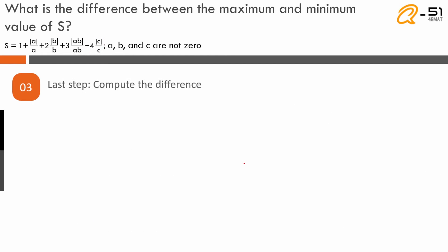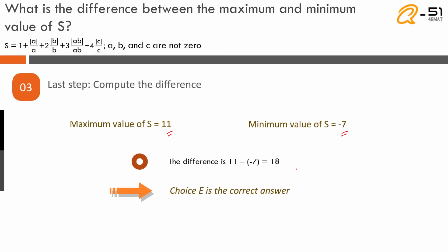The next step is to find the difference. We found the maximum value to be 11 and the minimum value to be −7. So the difference between the maximum and minimum value is 11 − (−7) = 18, and choice E is the correct answer.